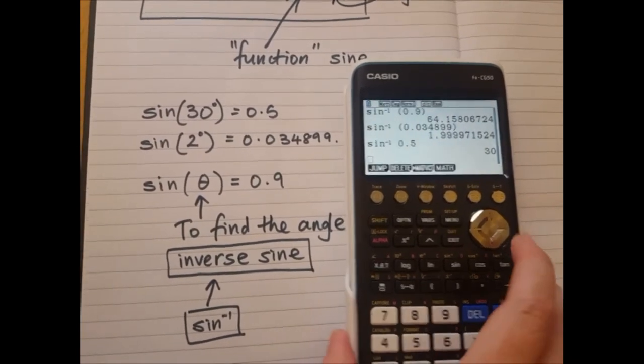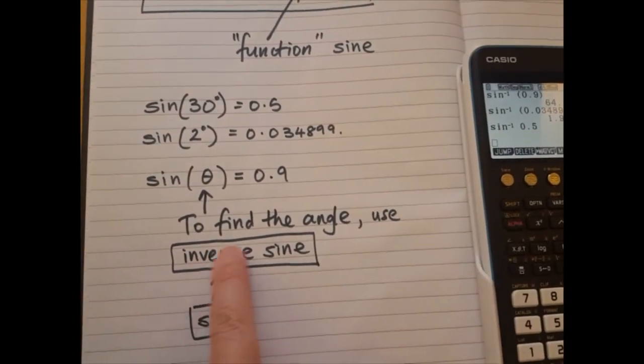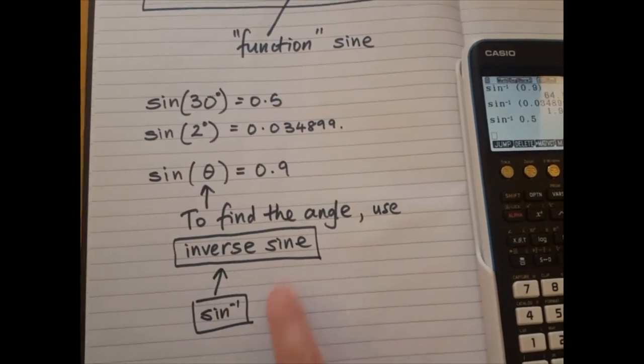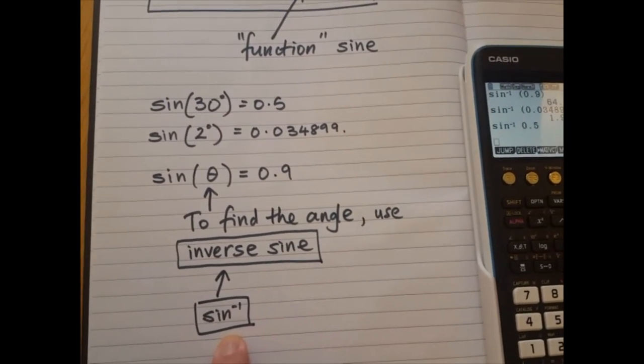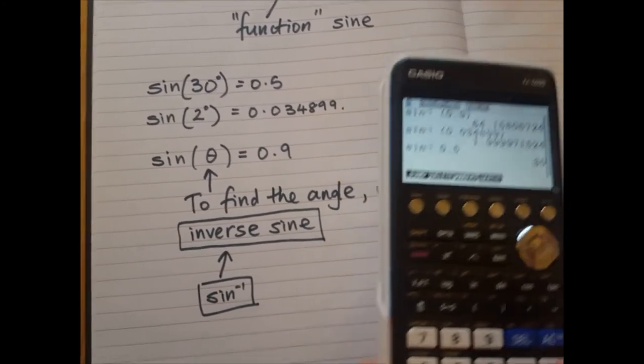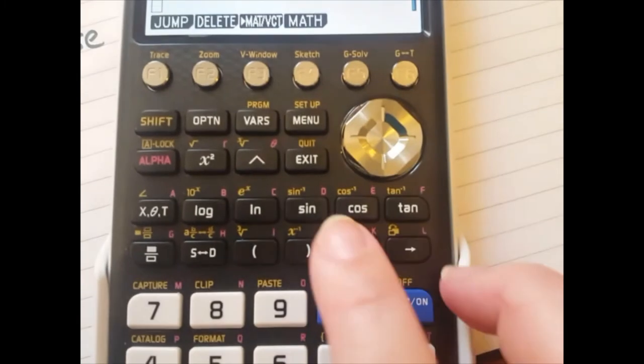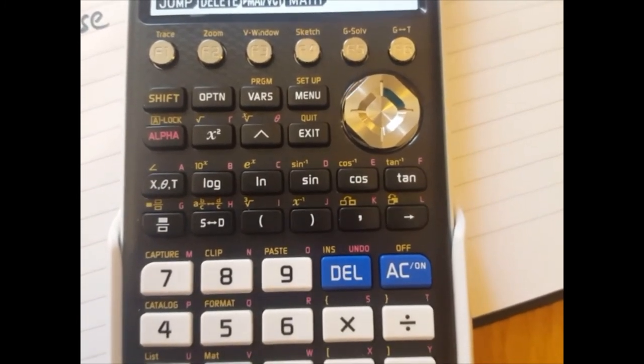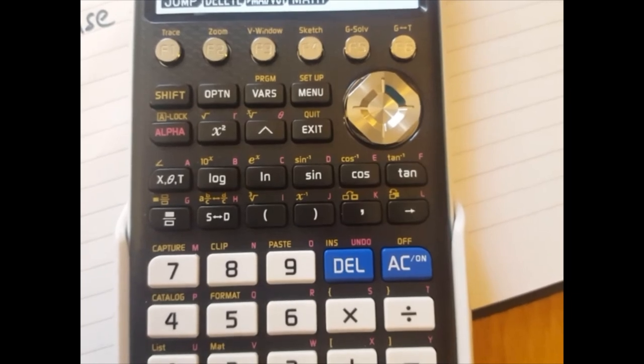So in conclusion, if you want to find the angle, you have to use the inverse sine. And on your calculator, it's labeled with a negative one. You should see it on yours in there. So the little orange writing. Okay. Well done. Let's do it again.